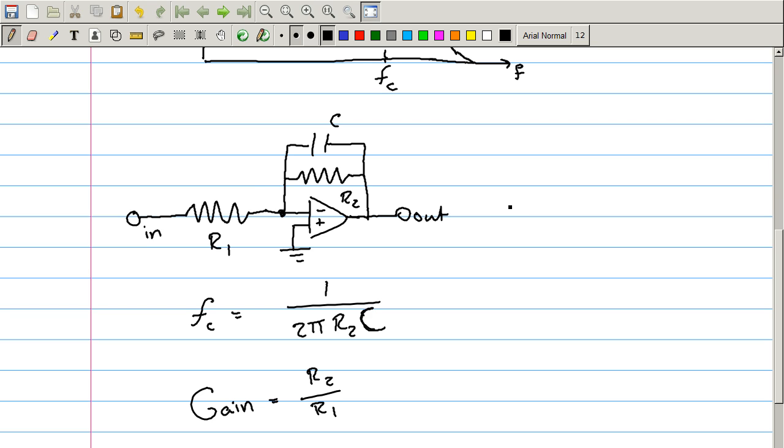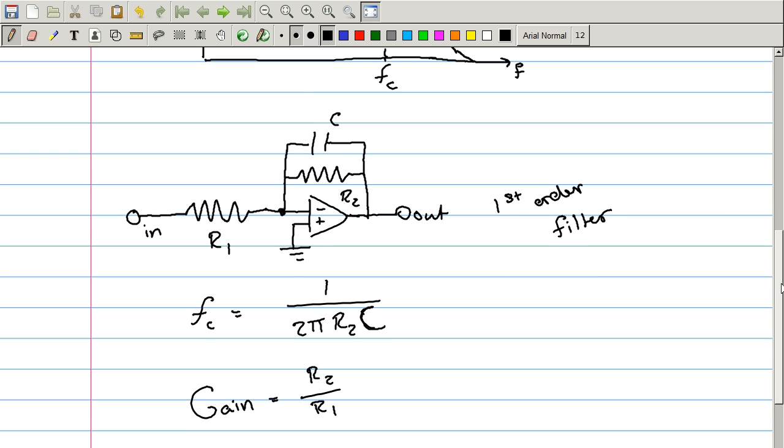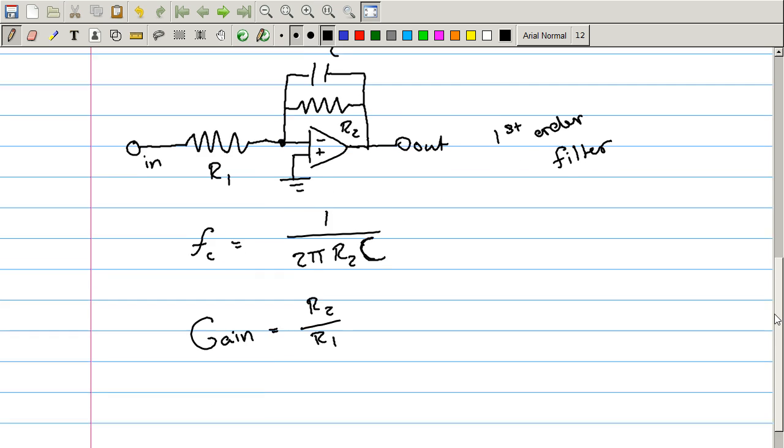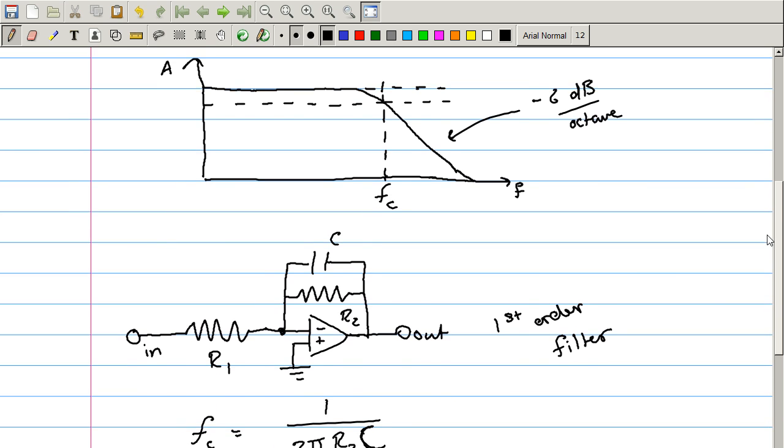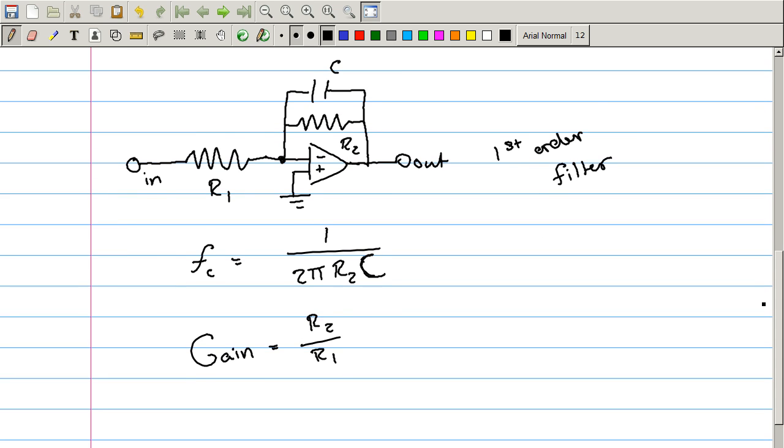Now this is a first order filter. So that results in the negative 6 decibels per octave decay slope. Remember that if you make this a second order, it decreases by 12, and then 18, increasing multiples of 6. Now, let's talk a little bit more about how this active filter differentiates from the normal passive filter.